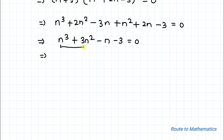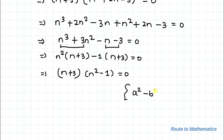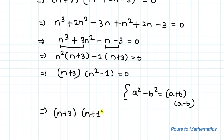Taking n² common from the first two terms and minus 1 common from the last two terms gives n²·(n+3) minus 1·(n+3) equals 0, so (n+3)·(n²−1) equals 0. Using the algebraic identity a²−b² equals (a+b)(a−b), we write this as (n+3)·(n+1)·(n−1) equals 0.